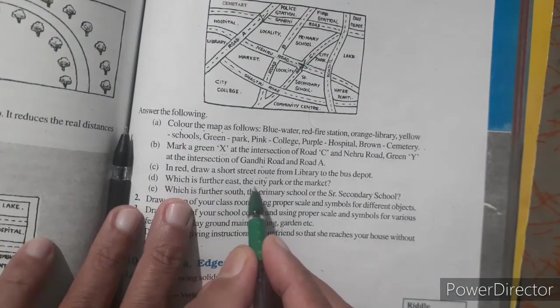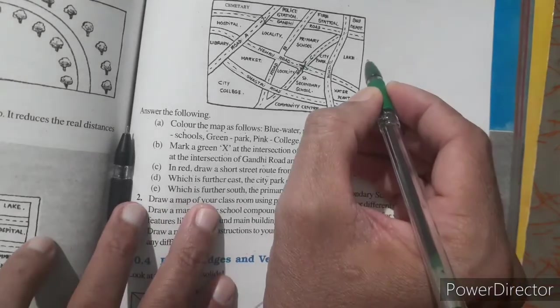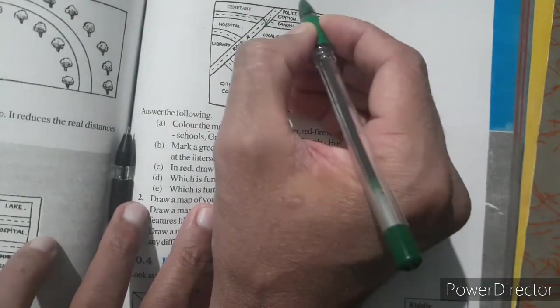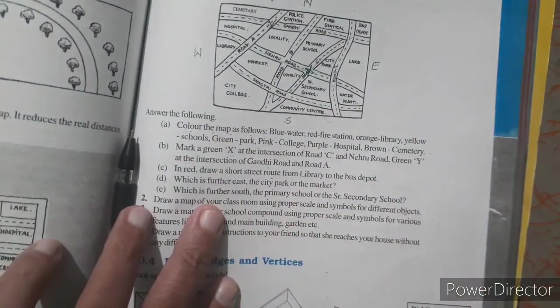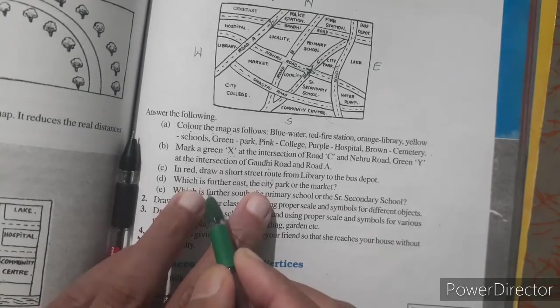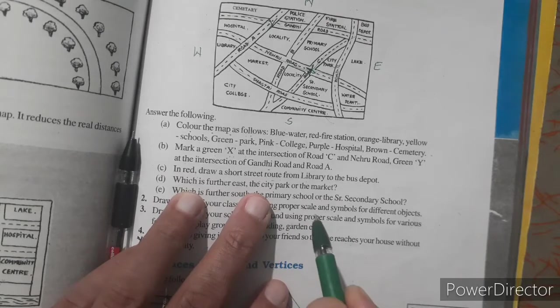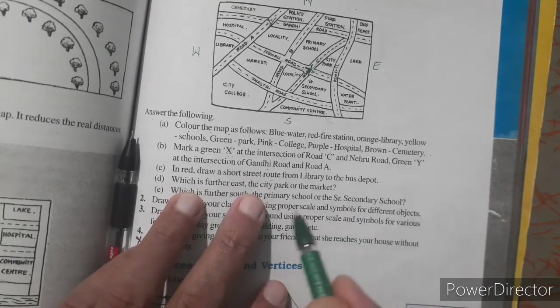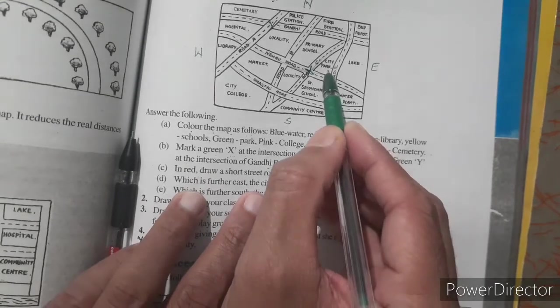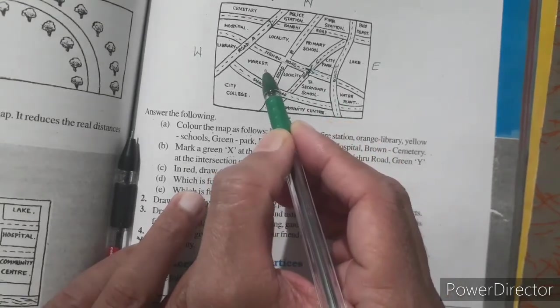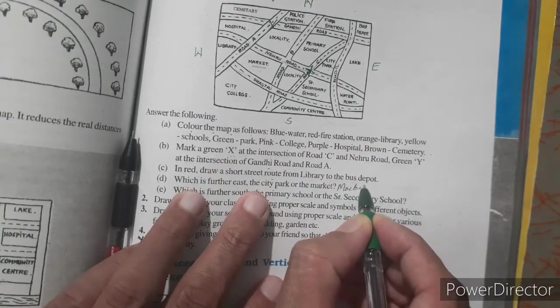Which is the further east, city park or market. So here look, this one is east side, this one is north side, this one is west side and south side. Now which one is further east, further means away from east side. City park is here, market is here. So what is further? That is market. So write down here market.